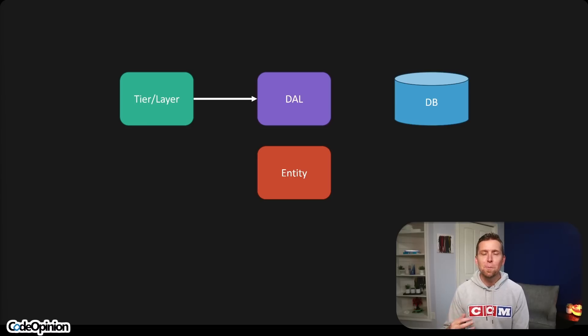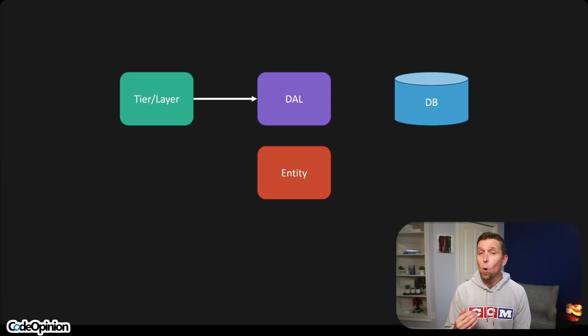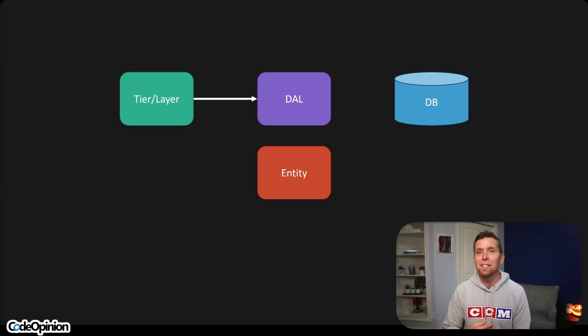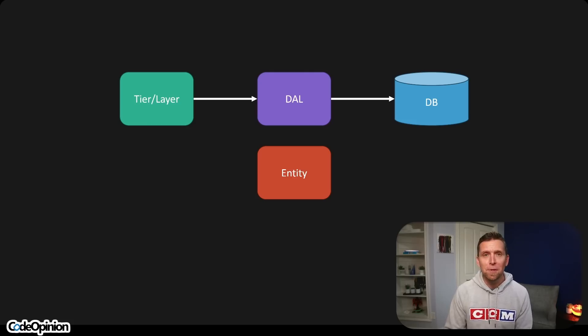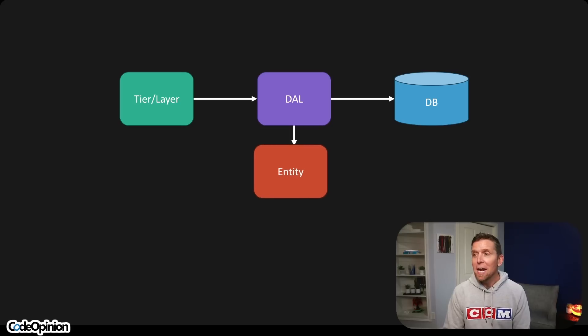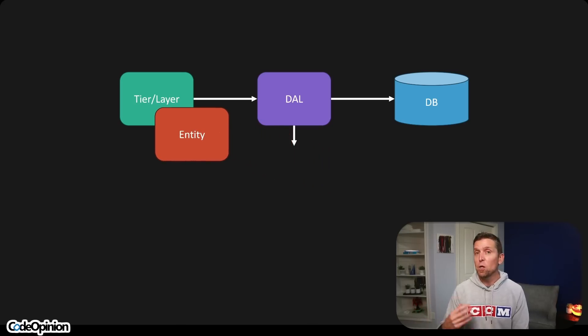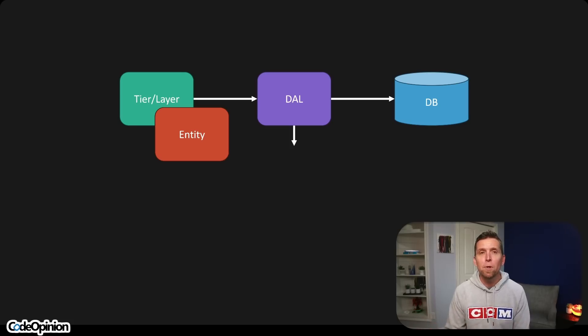Let's start where people misuse or misunderstand DTOs and where things go wrong. Let's say we have a tier or a layer. This could be something that gets serialized on the way out or it's in memory. At some point we're going to hit some type of data access, we hit our database, and if this is the case of an ORM, something in .NET like Entity Framework, you're thinking about retrieving an entity. And at that point you could return that entity, serialized back out to another tier or in memory to another layer.